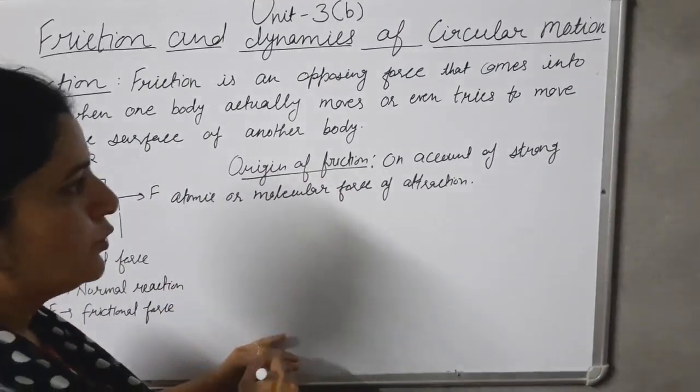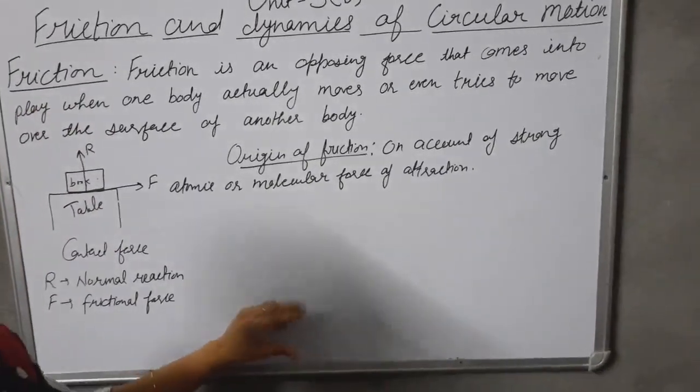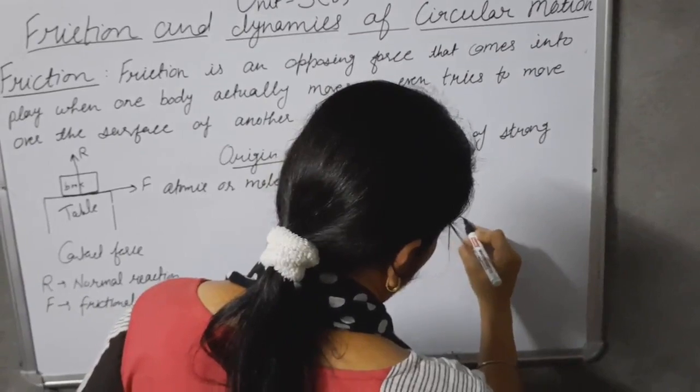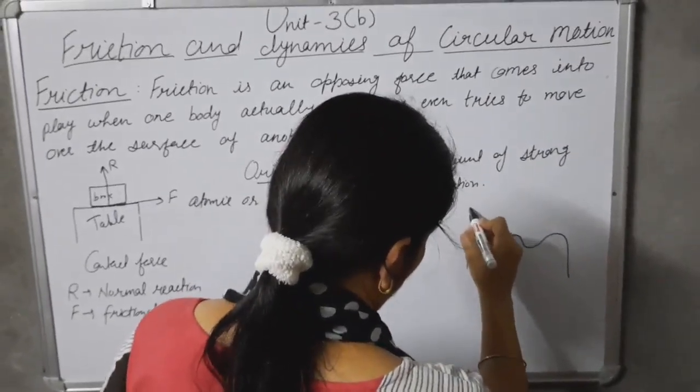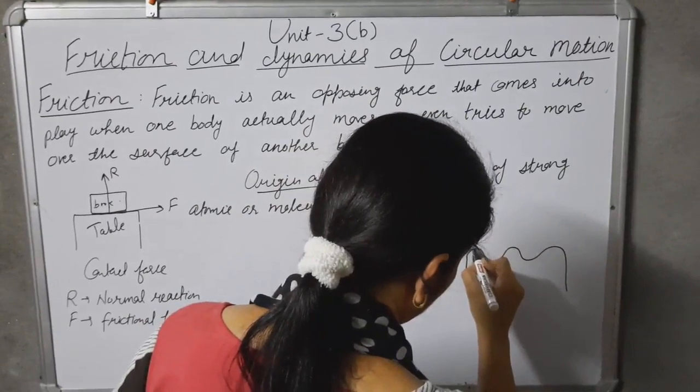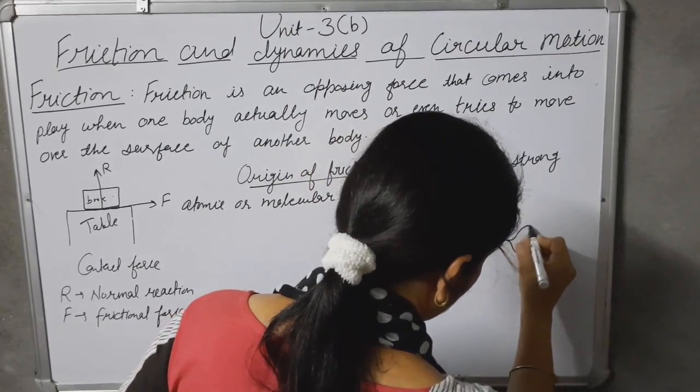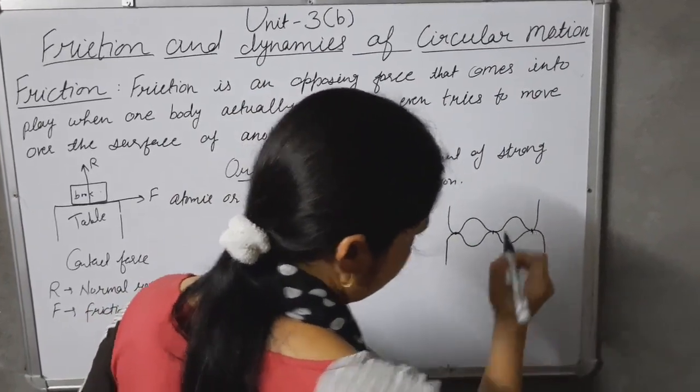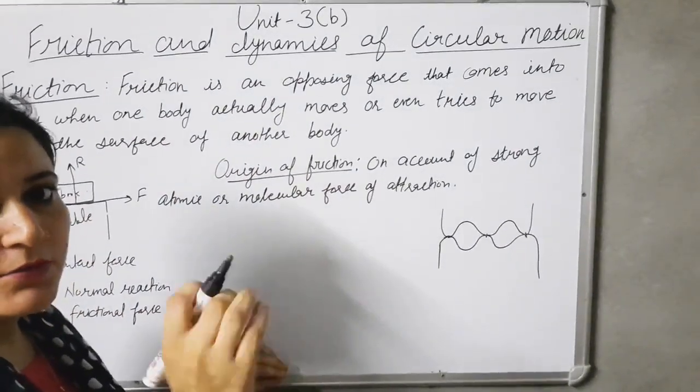Friction is due to the strong atomic or molecular force of attraction between the two surfaces in contact. When the two surfaces are in contact, on account of roughness of the surfaces, then only the high points will touch each other. At these points the area of contact is very small.